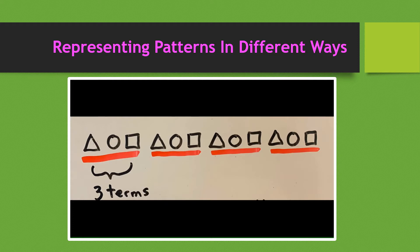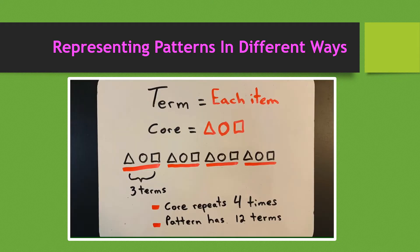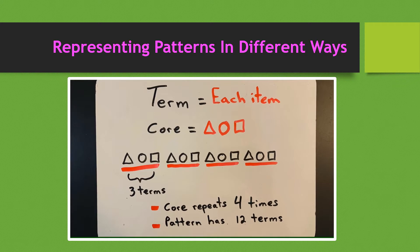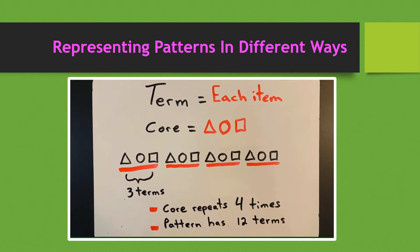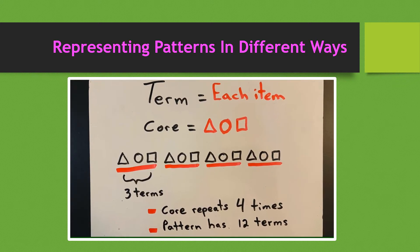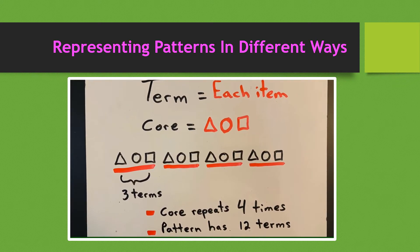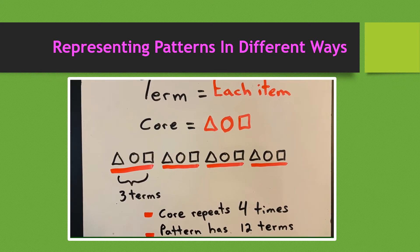This is of course a repeating pattern, so you can see there are four repetitions of the core. So our core repeats four times, and if we count all the items in the pattern, we have 12 terms.